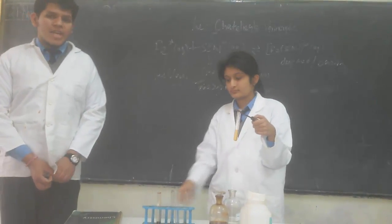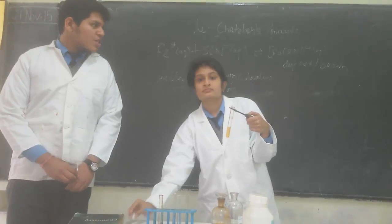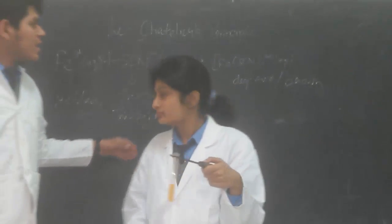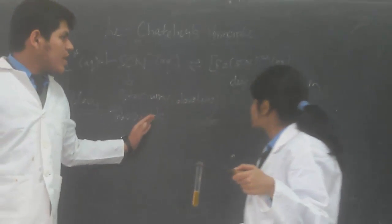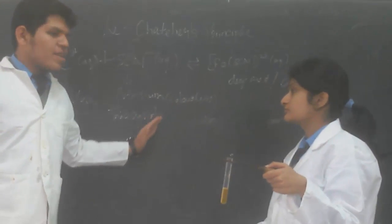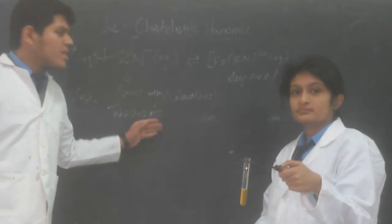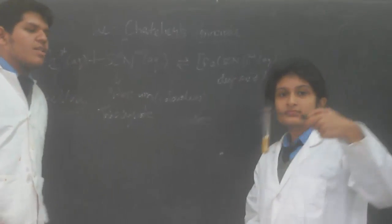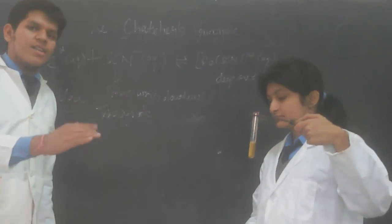So in order to replenish the concentration, the FeCl₃ will dissociate to give Fe³⁺ ions and the reaction will go in the backward direction, and the red color intensity reduces.